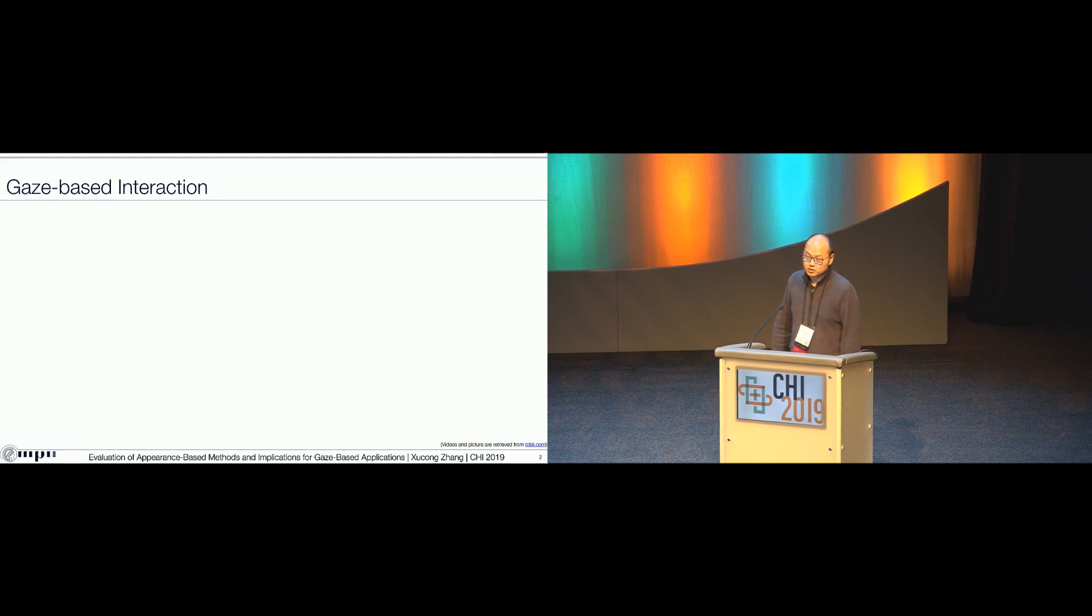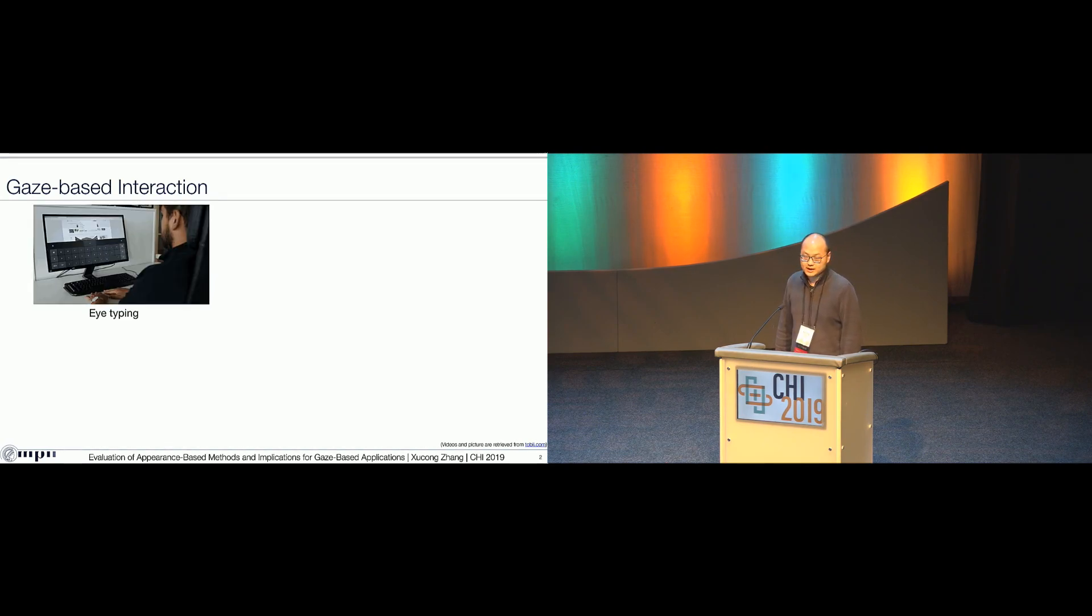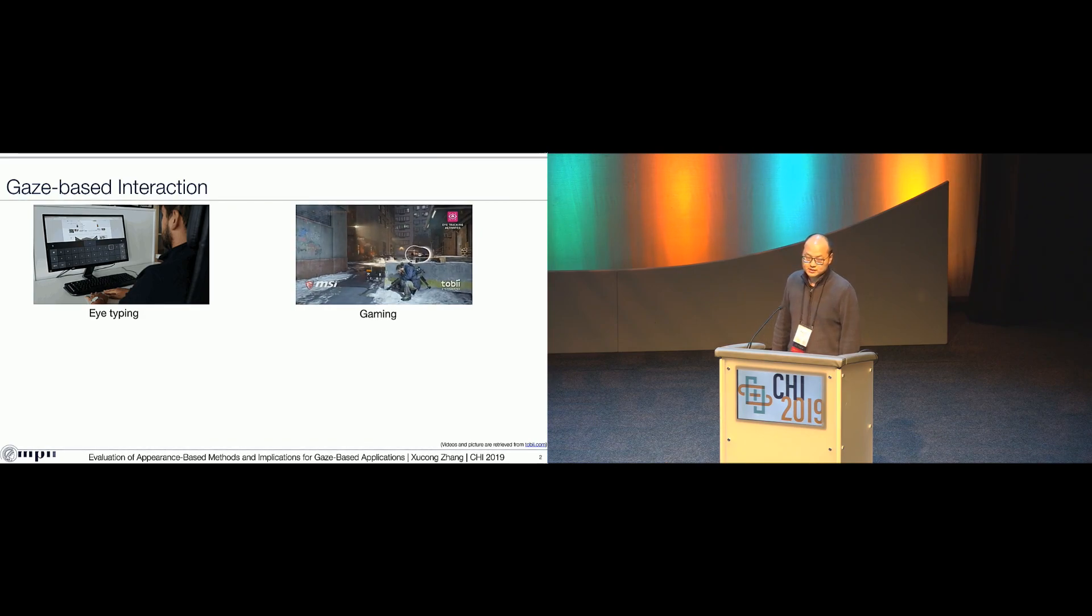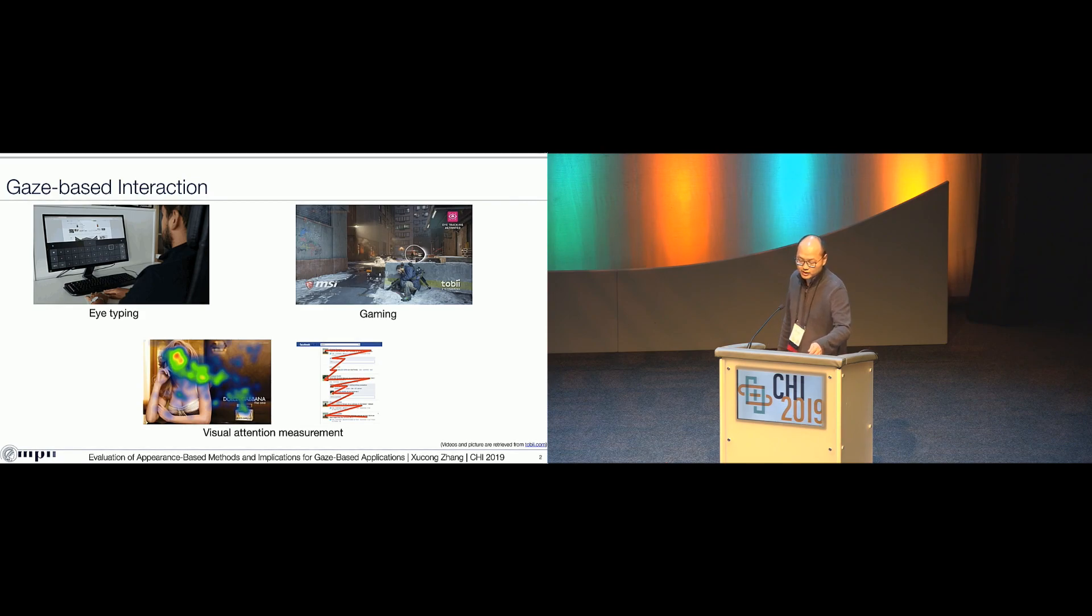I believe some of you may know that human eye gaze can be important for interactive systems. We can use human eye gaze as explicit input. For example, we can use eye gaze to tap the words. We can also use eye gaze to play video games so that you can shoot your enemy by just looking at them. We can also use eye gaze implicitly to model the user visual behavior. For example, we can generate the attention map over the user, over the poster, or social media.